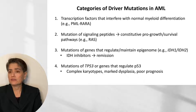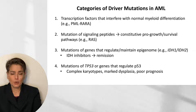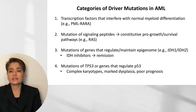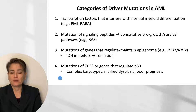AML driver mutations fall into four categories: mutations in transcription factors interfering with myeloid differentiation (e.g., PML-RARA fusion protein); mutations in signaling peptides causing constitutive pro-growth or survival pathways (e.g., mutated RAS); mutations in proteins regulating the epigenome such as IDH1 and IDH2 — IDH inhibitors can drive remission in these patients; and finally, loss-of-function mutations of TP53, which lead to multiple mutation events, complex karyotypes, marked dysplasia, and poor prognosis.